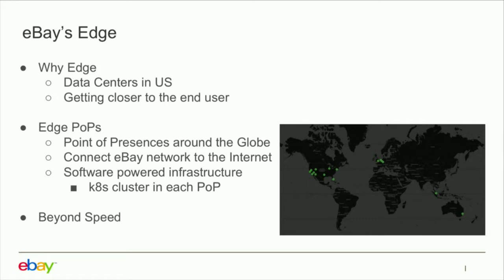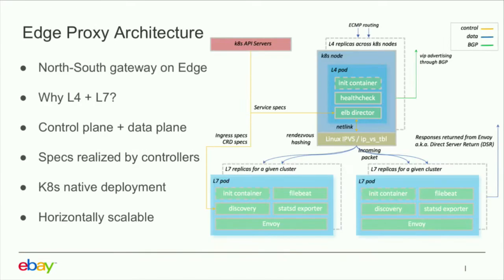Once we started that journey of converting to a software-based edge proxy, we realized there are much more things we can do than just increase speed — for example, it can help us increase site availability and allows us to do security at the edge. But it all starts with a software-based edge proxy. We use the edge proxy as our ingress gateway on the edge. It consists of one layer of layer-4 software load balancer and one layer of L7 proxy using Envoy.